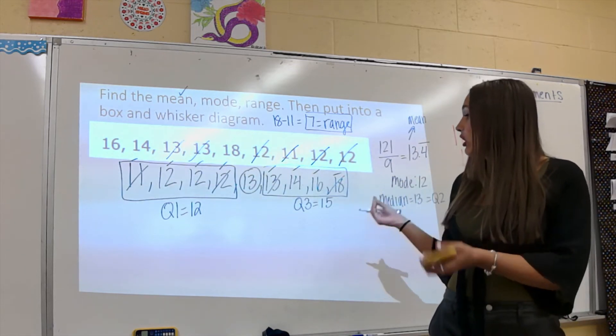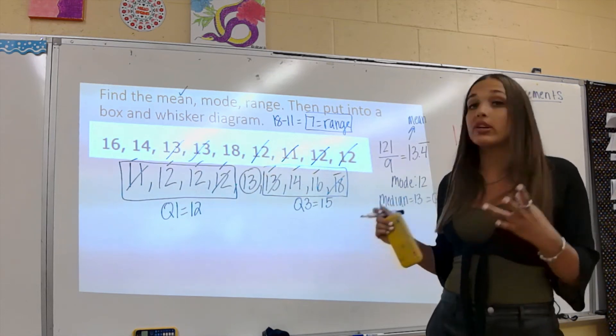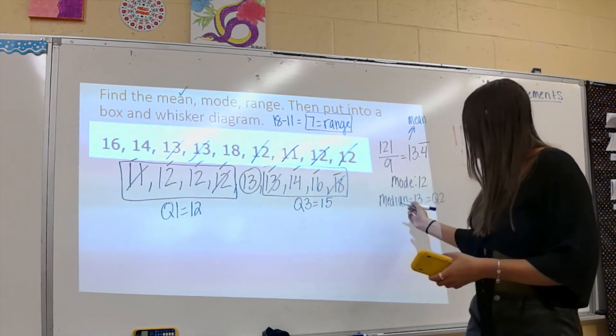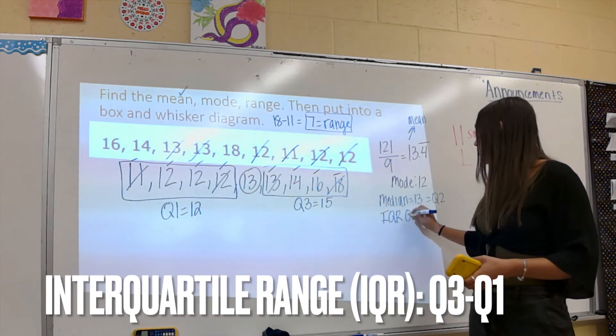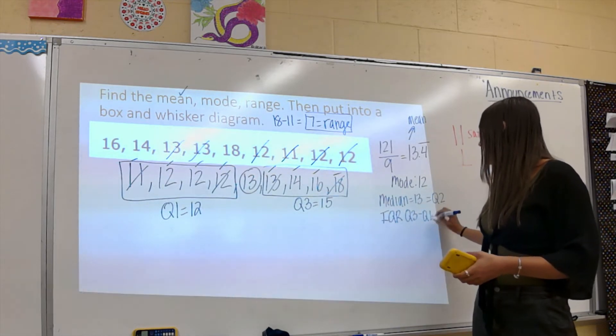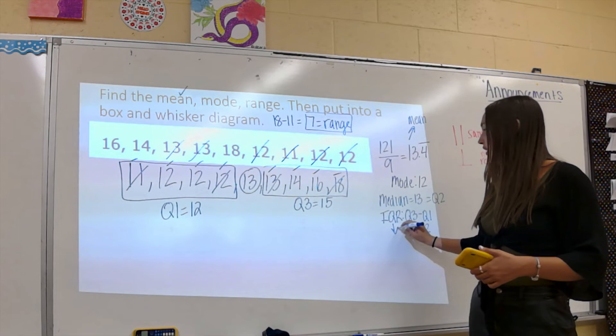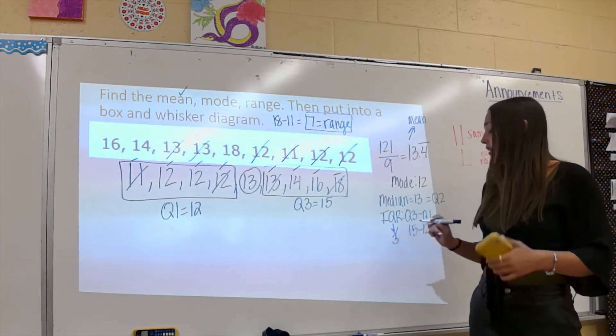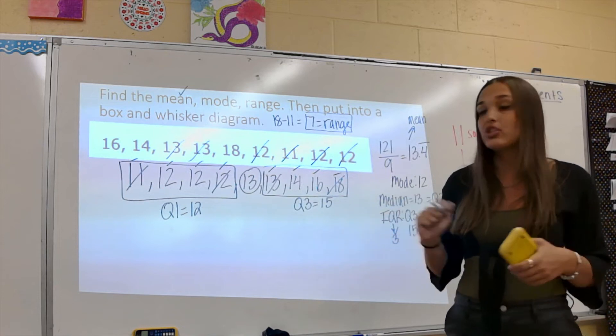Now I can talk about the interquartile range, the IQR. That's important to know. My IQR is my Q3 minus my Q1. So if I do 15 minus 12, my interquartile range is going to be three. That's another question your teacher might ask you, so it's important to know that information.